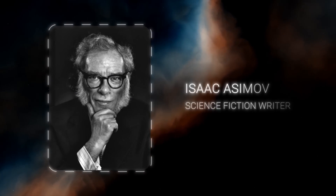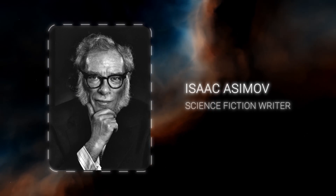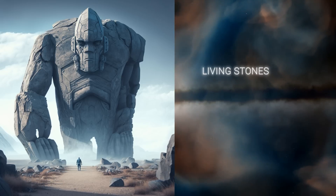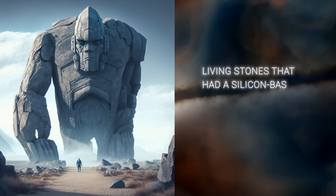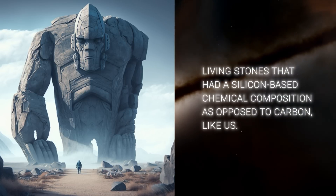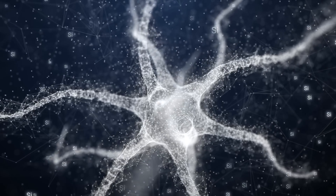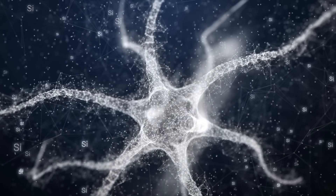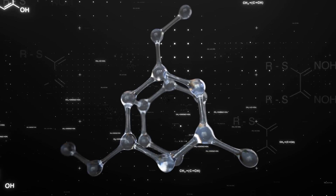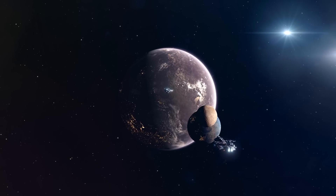The famous author of The Laws of Robotics, science fiction writer Isaac Asimov, describes some forms of alien life as living stones that had a silicon-based chemical composition, as opposed to carbon like us. But what if we told you that silicon-based life may not be entirely fictional? Today we will delve into our biology and try to answer whether the existence of silicon-based life is possible.